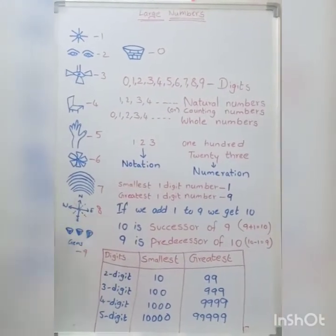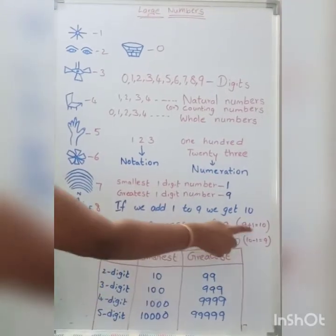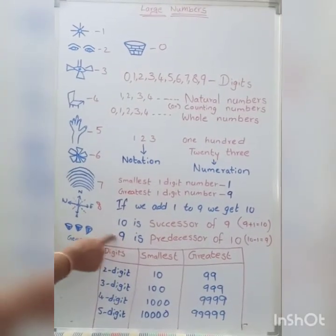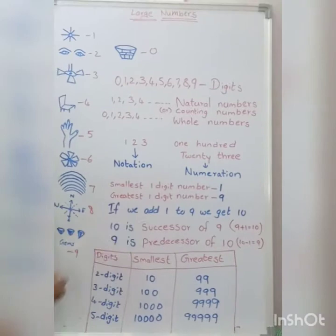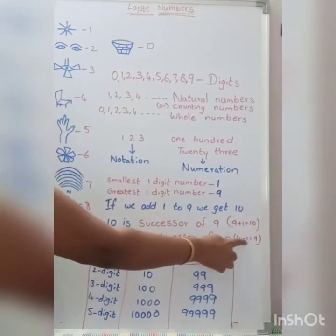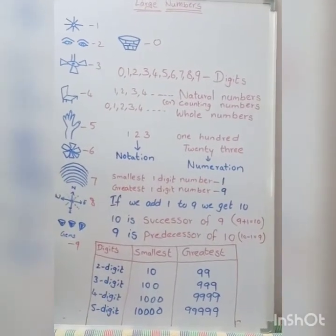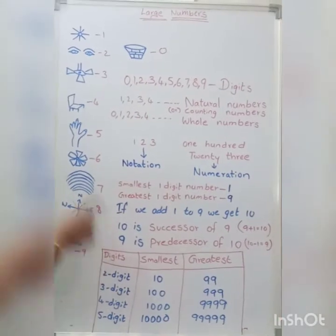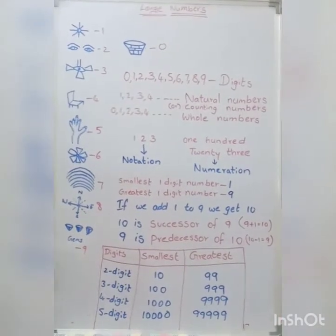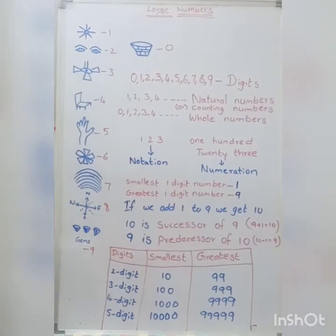Here, 10 is the successor of 9 — by adding 1 to 9, we got 10. And 9 is the predecessor of 10 — we are subtracting 1 from 10. To summarize: if we add 1 to any number we get the successor, and if we subtract 1 from any number we get the predecessor.